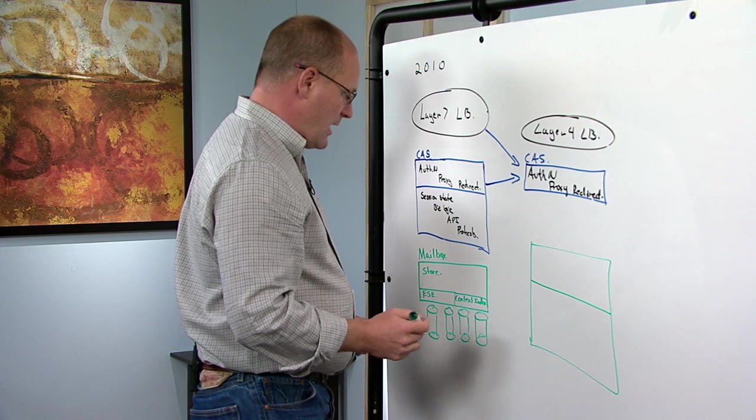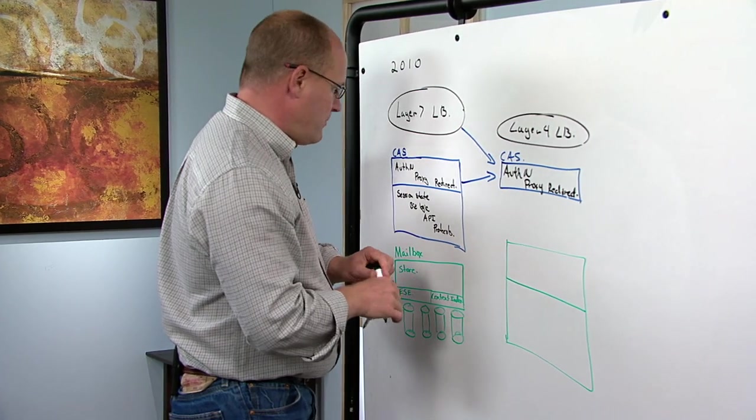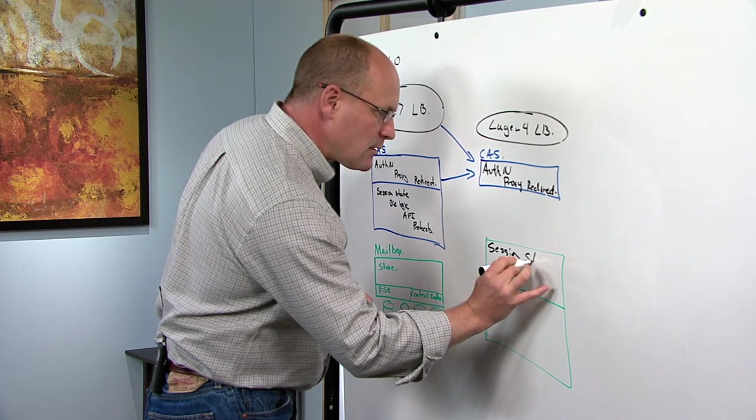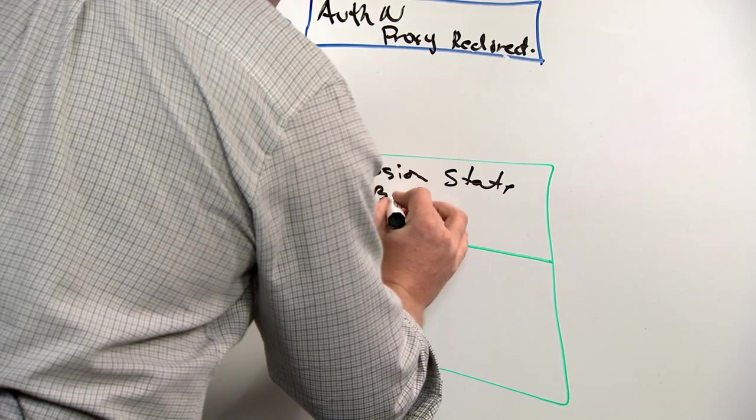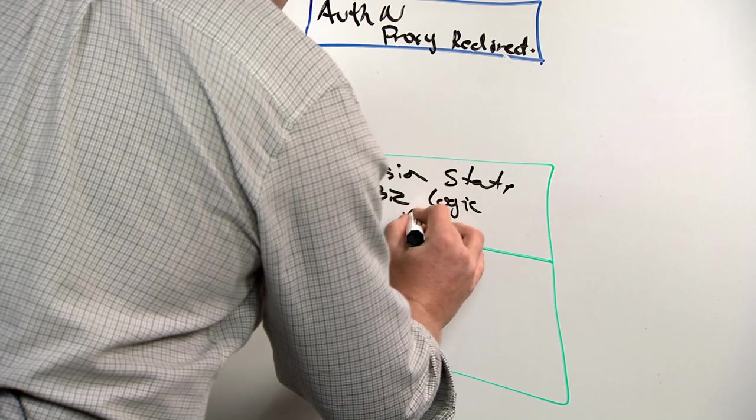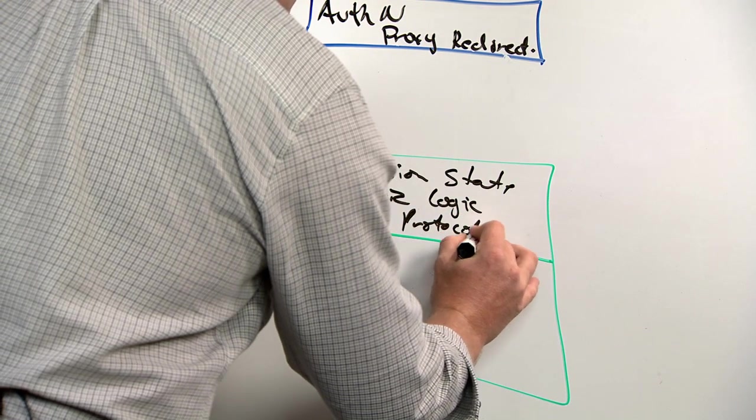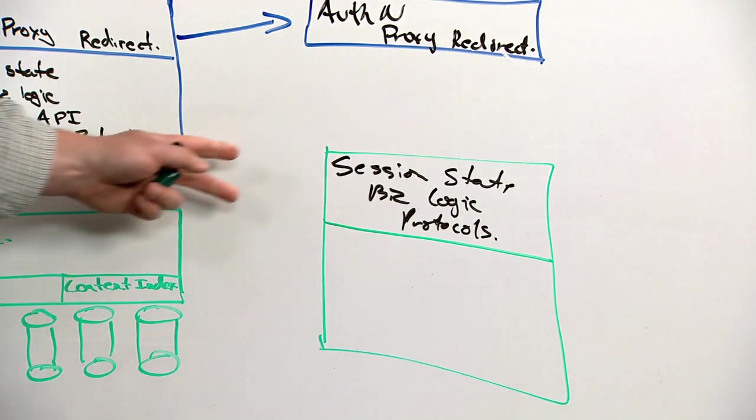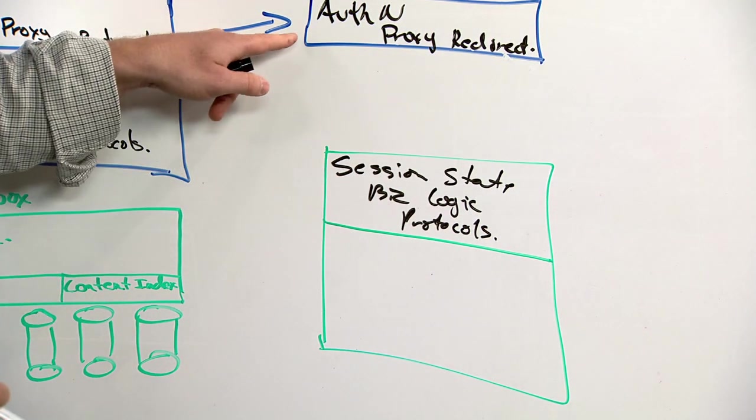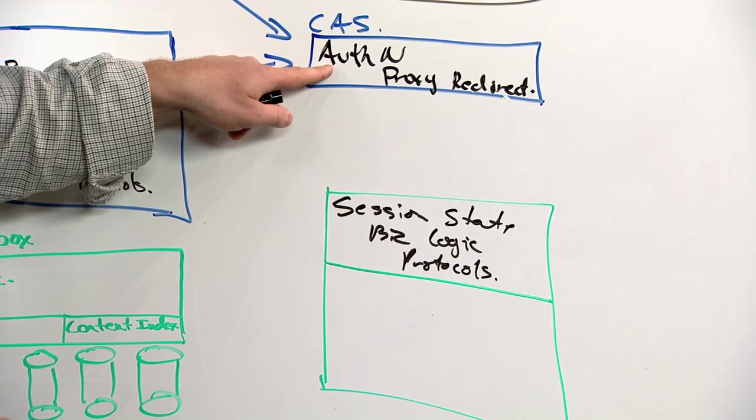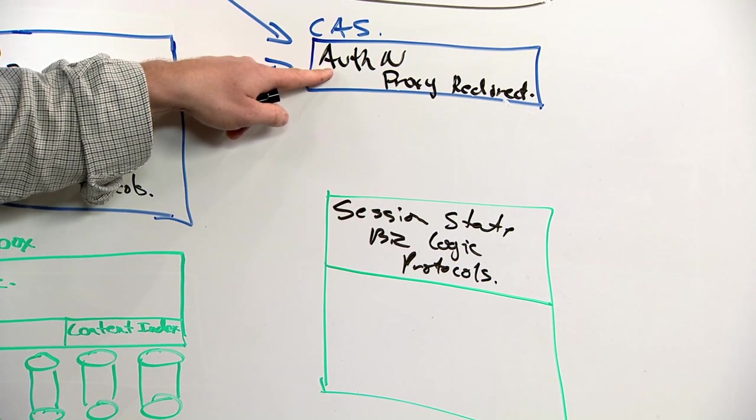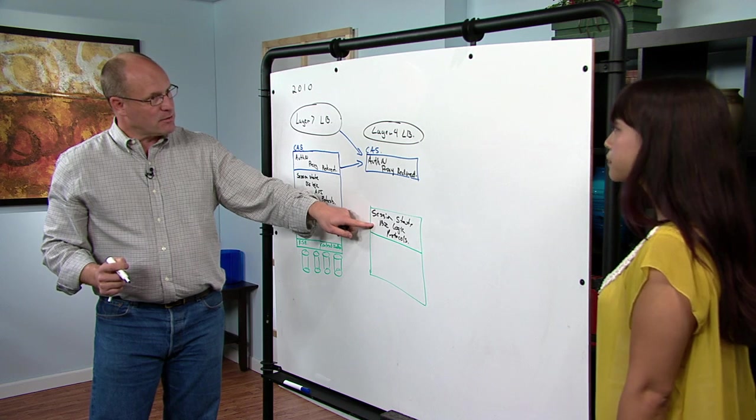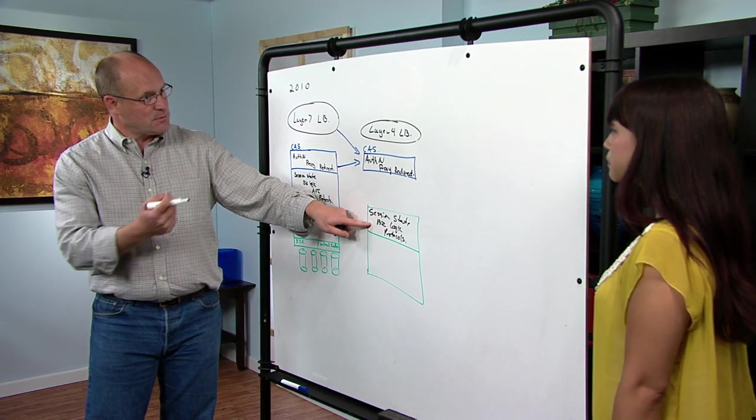So all of that session state, business logic, protocols, the deep protocol handling and so on, all gets moved back to the mailbox server. And now the CAS server just needs to do an active directory lookup to find out where the mailbox is and go back to the mailbox server that you own.